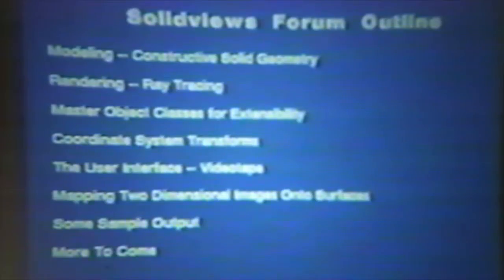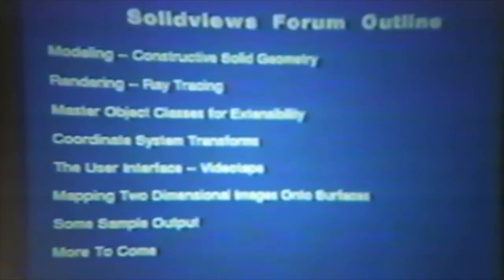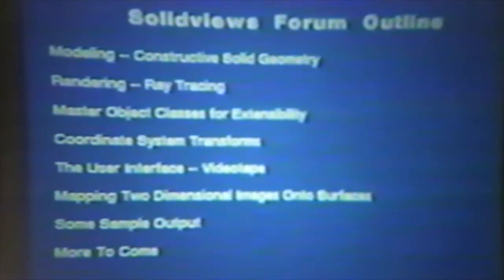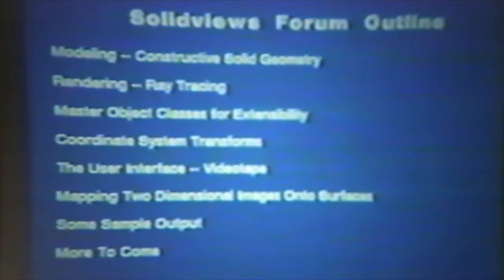Rendering is also particularly important for an illustrator — once you have the model, the question is how do you use it to make a picture? The third section will be on extensibility. Once I started building this illustrator, I realized I wanted it to do much more wonderful things than I could do in seven months, and I tried to build in facilities for adding more shape classes as time went on.